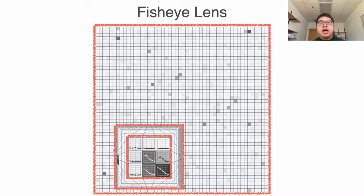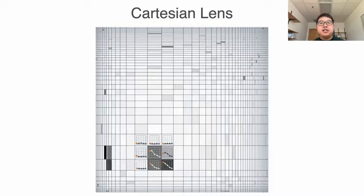The second one is the Cartesian lens, which determines the scaling factors according to the distance from the cursor to the cells. It ensures that cells are still in the shape of rectangles. However, the cells are all in different sizes.